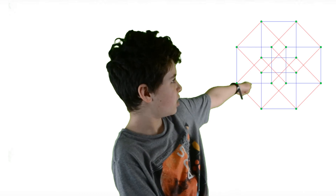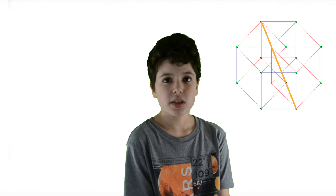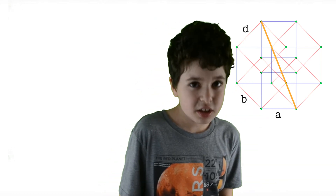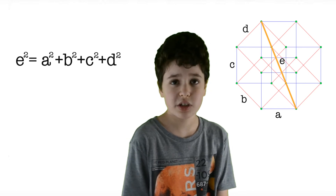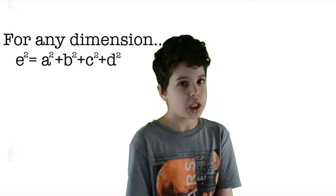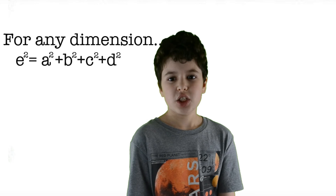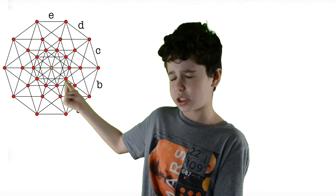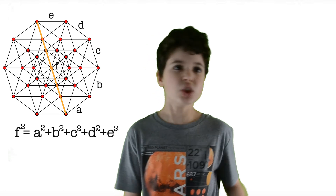Generalizing the Pythagorean theorem to 4D: for a tesseract with sides A, B, C, D, the body diagonal E satisfies E² = A² + B² + C² + D². The pattern always holds: to find the diagonal of any hypercube in any dimension, square all the side lengths, sum them, and take the square root.